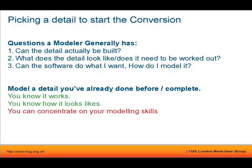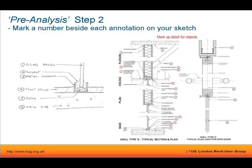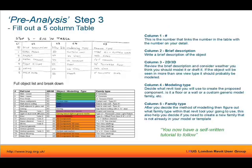I have a method I teach new people in my office, where we take the detail and annotate every single item. The next step is to add a number beside each item, listing absolutely everything. Then when you have the number and detail, you fill in a table. The number links the table to the detail; you list what the object is. You're deciding whether it's 2D or 3D, thinking about how you're going to model it. You then decide what kind of Revit tool to use — is it a floor, is it a curtain wall? You can put the family type in, and what that does is build a self-made tutorial on how to build that detail.